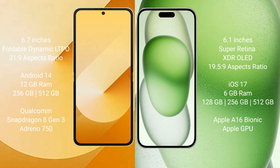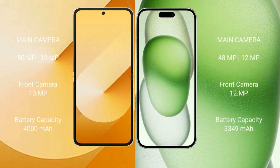The Samsung Galaxy Z Flip 6 comes with 12 GB RAM and 256 GB or 512 GB internal storage, with a Qualcomm Snapdragon 8 Gen processor and GPU. The iPhone 15 comes with 6 GB RAM and 128 GB, 256 GB, or 512 GB internal storage, with an Apple A16 Bionic processor and Apple GPU.